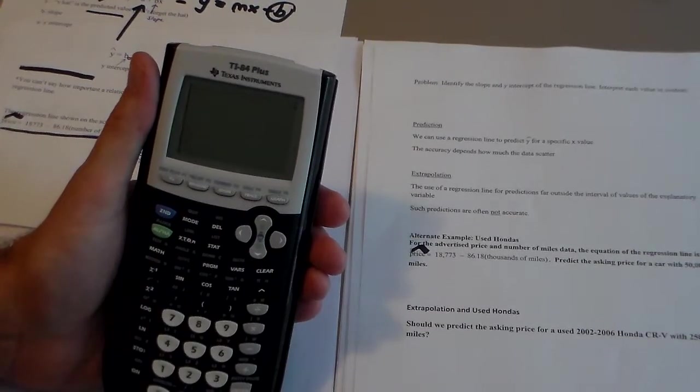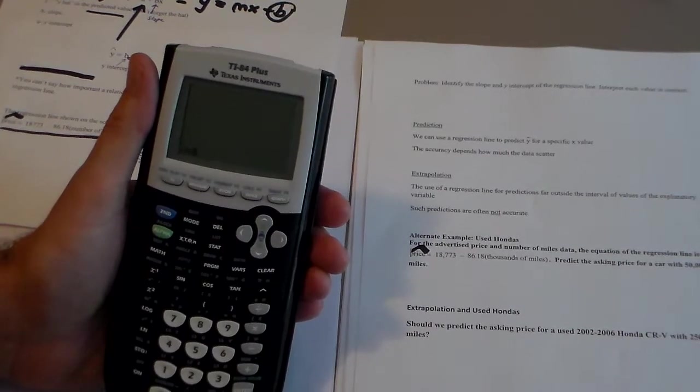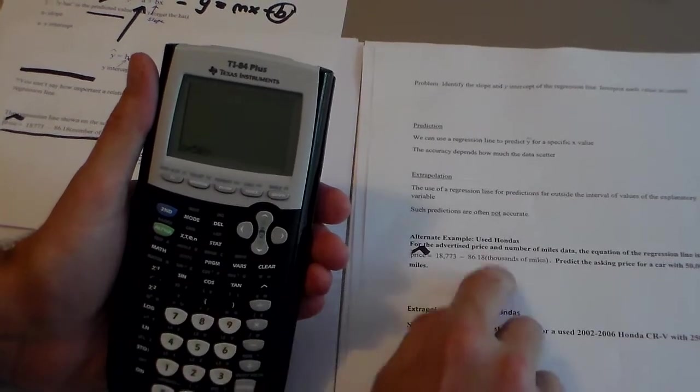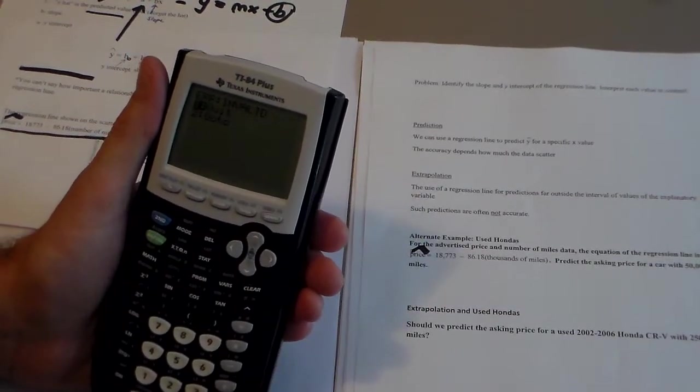And then go back to my Y equals screen, and then hit second and trace for calc, and one for value. And X equals, and now I'm going to plug in 50 because it's in thousands of miles, and I'm going to hit enter, and it says invalid.